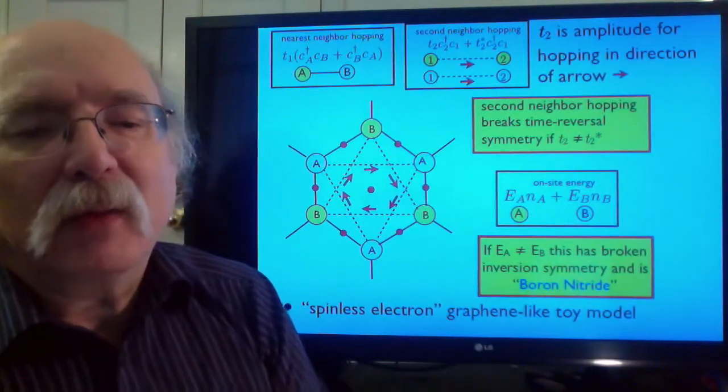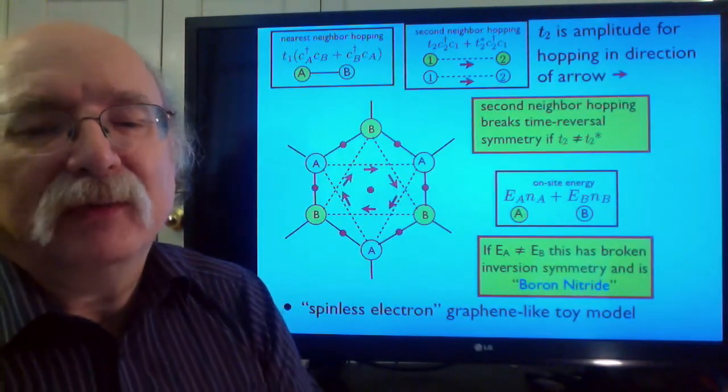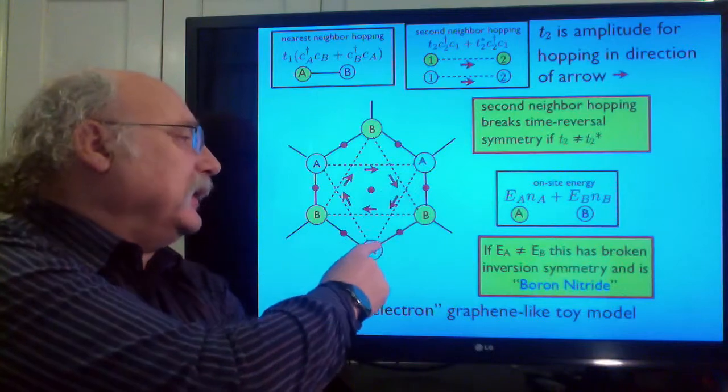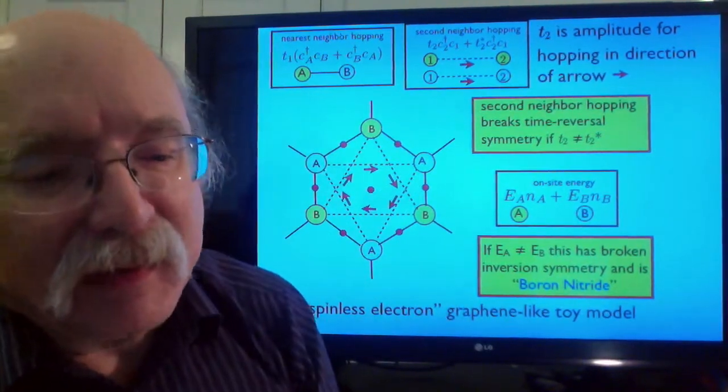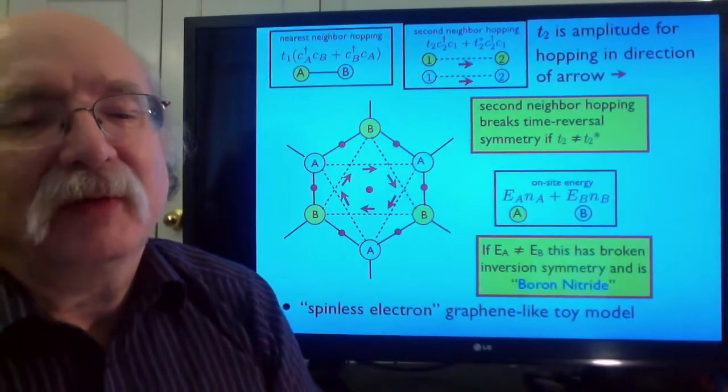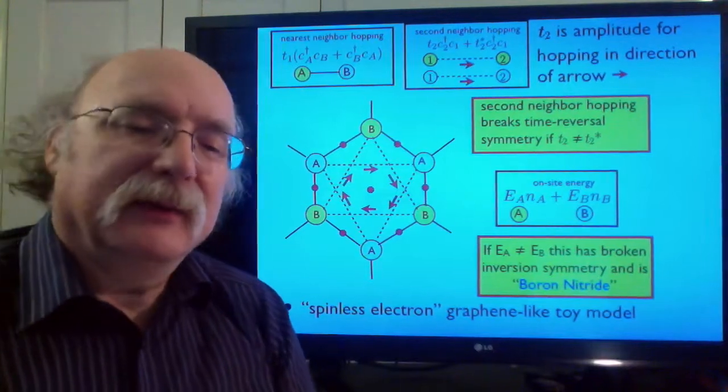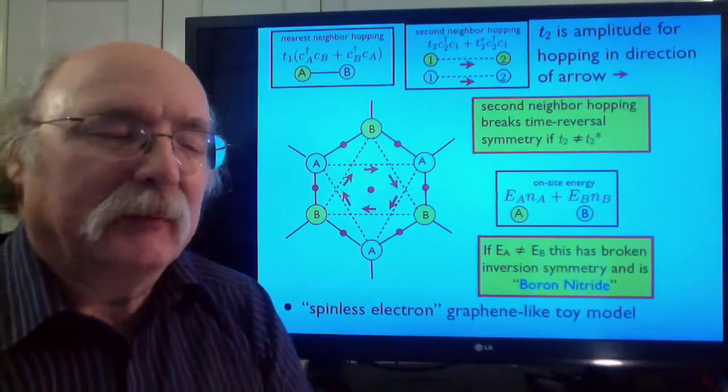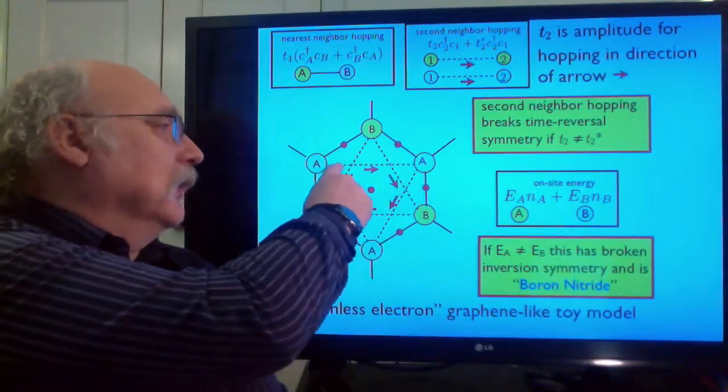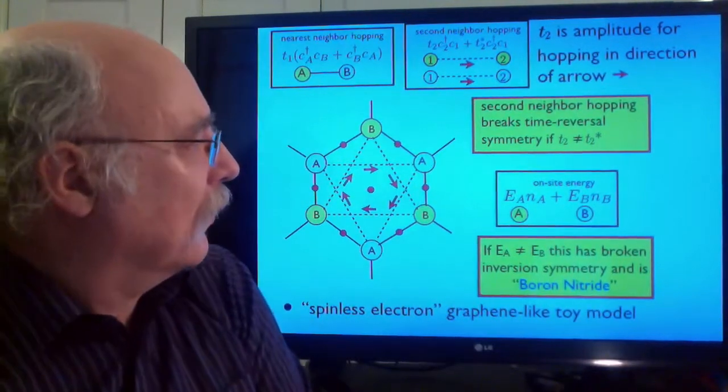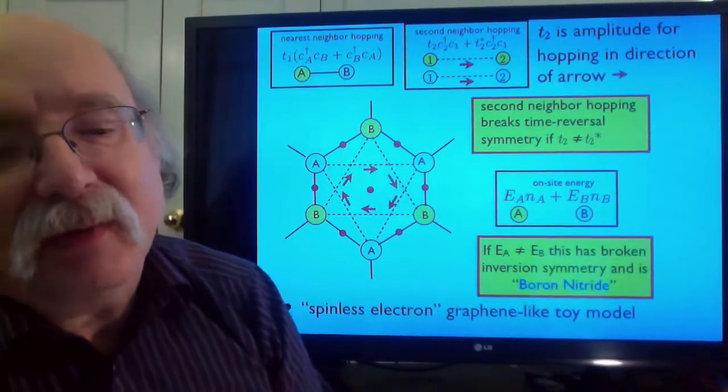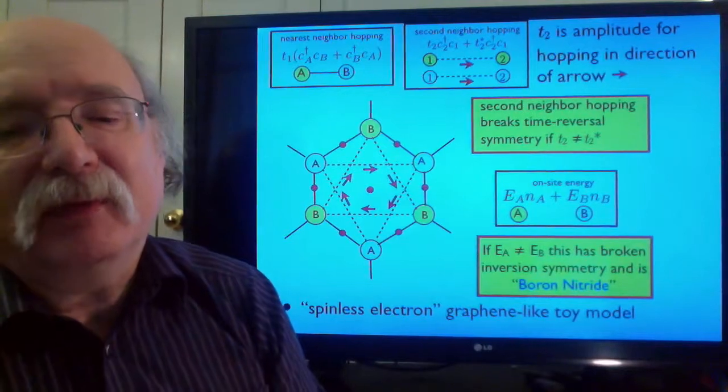I give all the clockwise second neighbor hopping amplitudes an amplitude equal to t, a complex number, and the anti-clockwise ones are its complex conjugate t-star. The fact that forward and backward scattering, hopping in the direction of this arrow, are not equivalent to each other is a symptom of time reversal breaking.